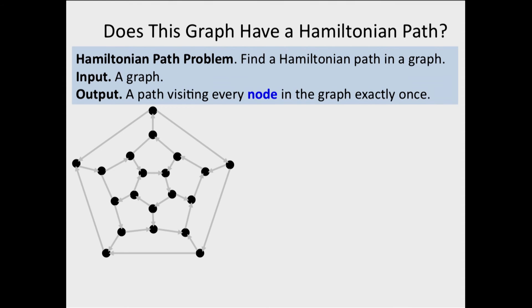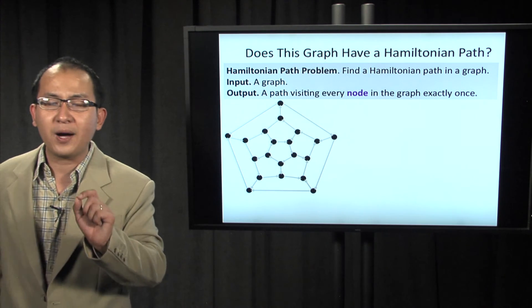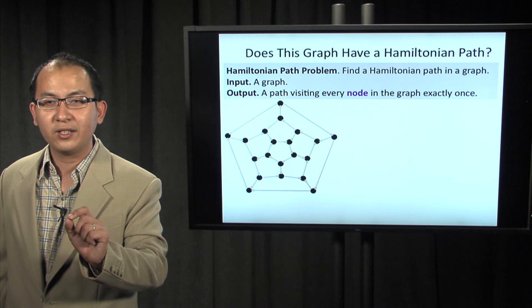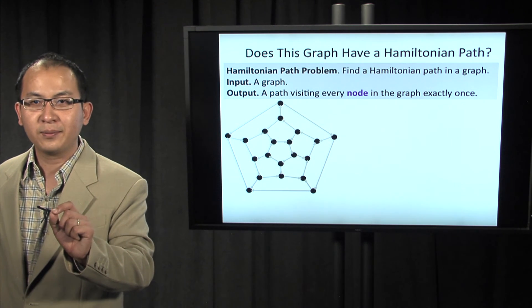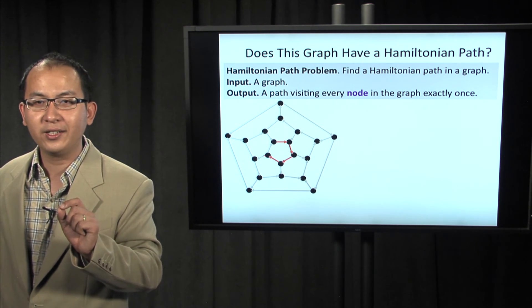For example, let's look at this directed graph. Is there a Hamiltonian path in this graph? Yes, there is, but it's a little tricky to find. Here it is.